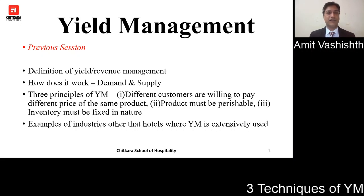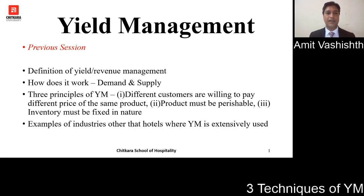In the previous session, just for revision, this slide has been made so that you can see what we did last time. We covered the definition of yield, and clearly stated that yield management and revenue management are interchangeable terms. We spoke about how yield works in terms of demand and supply equations, and covered in detail the three different principles: different customers are willing to pay different prices for the same product; products must be perishable in nature; and inventory needs to be fixed in nature. That session ended with examples of industries other than hotels where yield management is used extensively.